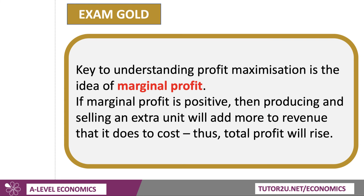Now, key to understanding profit maximisation is the idea of marginal profit — the cost of the next unit compared to the revenue from selling the next unit. If marginal profit is positive, then producing and selling an extra unit will add more to revenue for the firm than it does to cost, and total profit will rise. But if marginal cost is greater than marginal revenue, then marginal profit becomes negative and profits start falling.